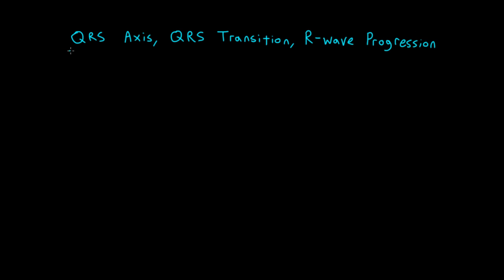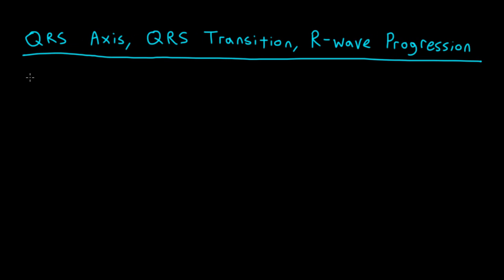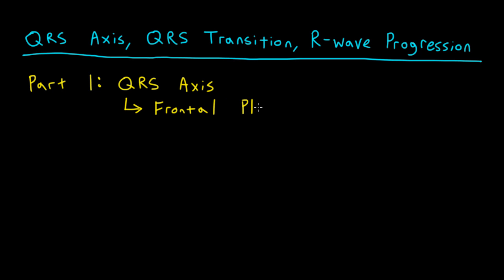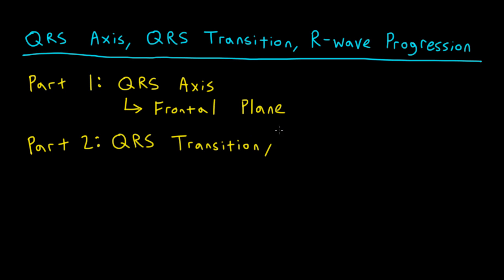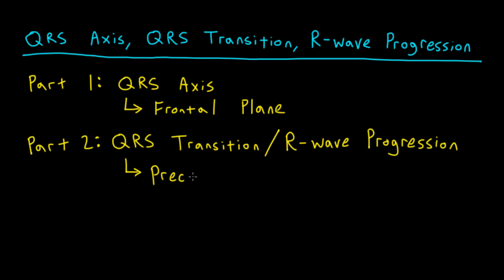This is QRS axis, QRS transition, and R-wave progression. In part one of this two-part video, I'll break down the concept of the frontal plane QRS axis, and I'll help you understand what it means and how it helps you when reading your patient's EKG. In part two, I'll flesh out the concepts of QRS transition and R-wave progression, which represent a way to characterize what the QRS complex is doing in the precordial leads.